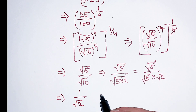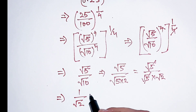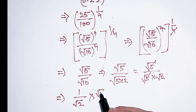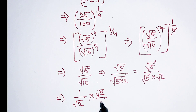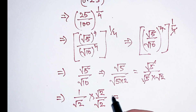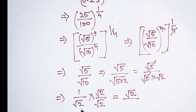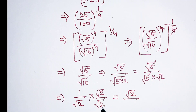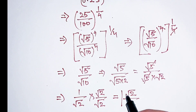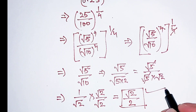Now we will rationalize this by multiplying numerator and denominator by square root of 2. The denominator becomes square root of 2 multiplied by square root of 2, which equals 2. So the final answer is square root of 2 over 2.